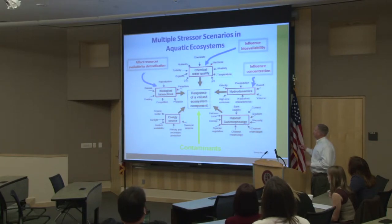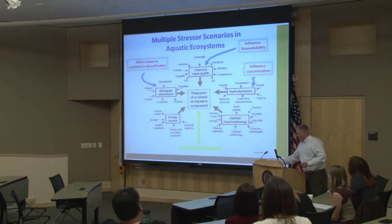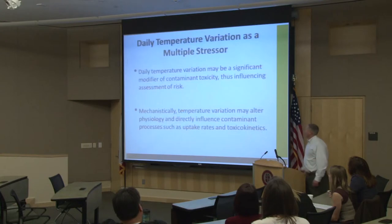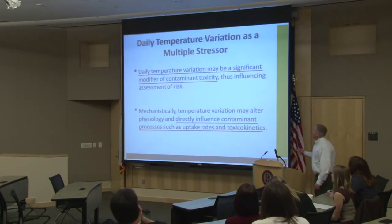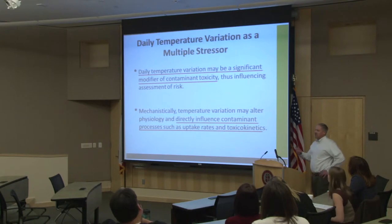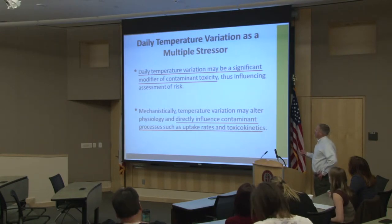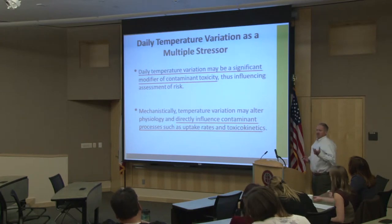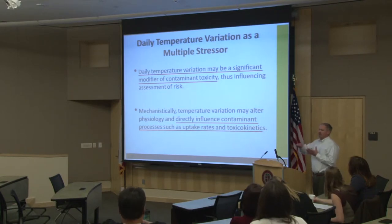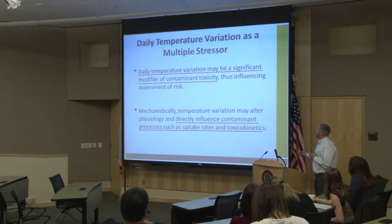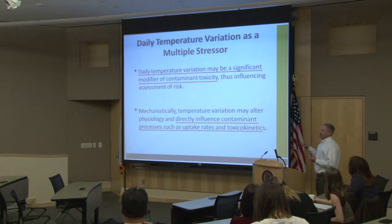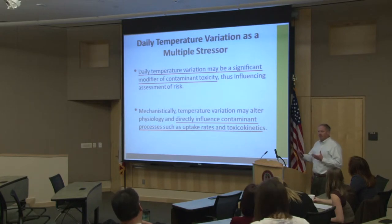What I'll present today specifically focuses on temperature — how things might change under climate change and how that relates to how contaminants affect biotic resources. We're interested in daily temperature variation as a significant driver for contaminant toxicity, and how the assessment of risk could be influenced by that. Mechanistically, you can envision all kinds of physiological changes that can directly influence contaminant processes such as uptake rates and toxicokinetics — how chemicals move around in an organism.